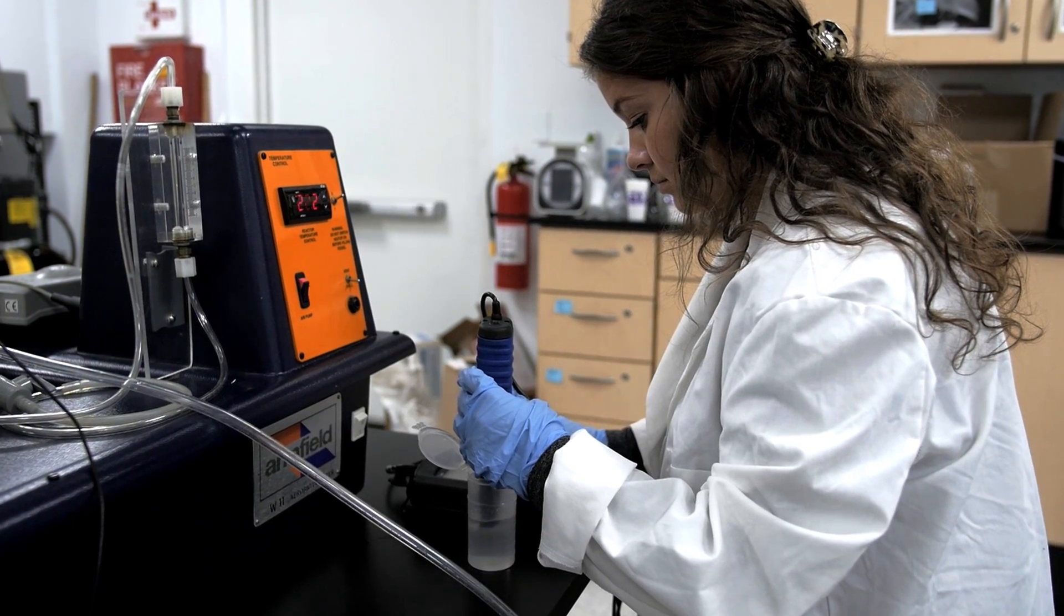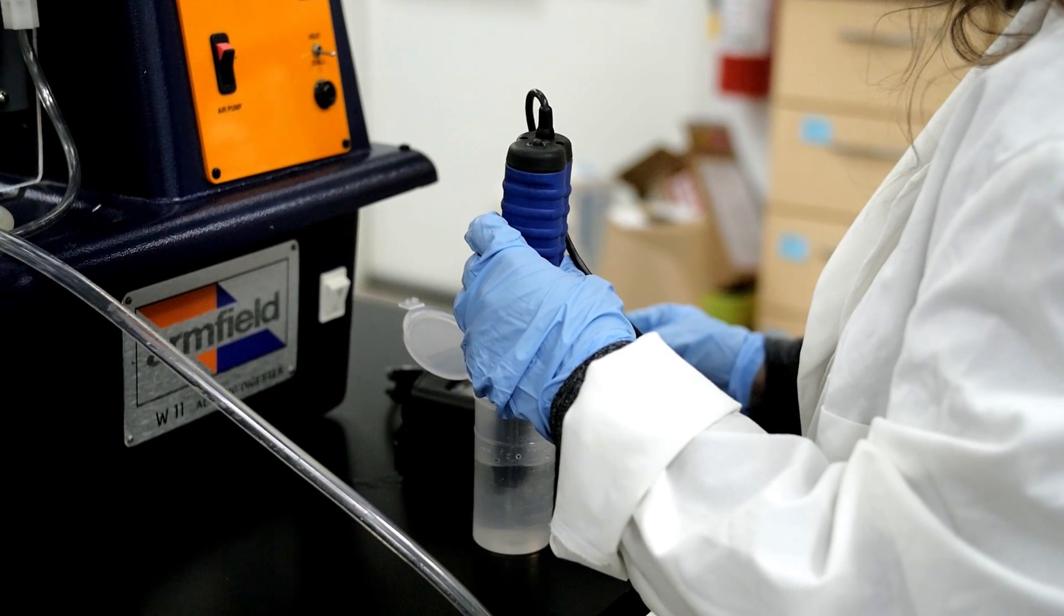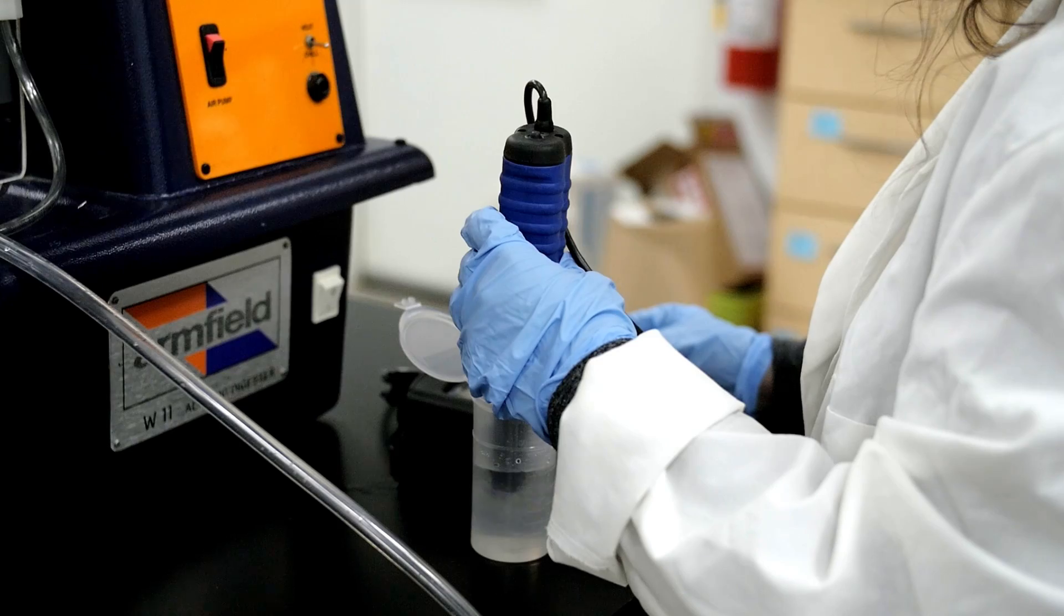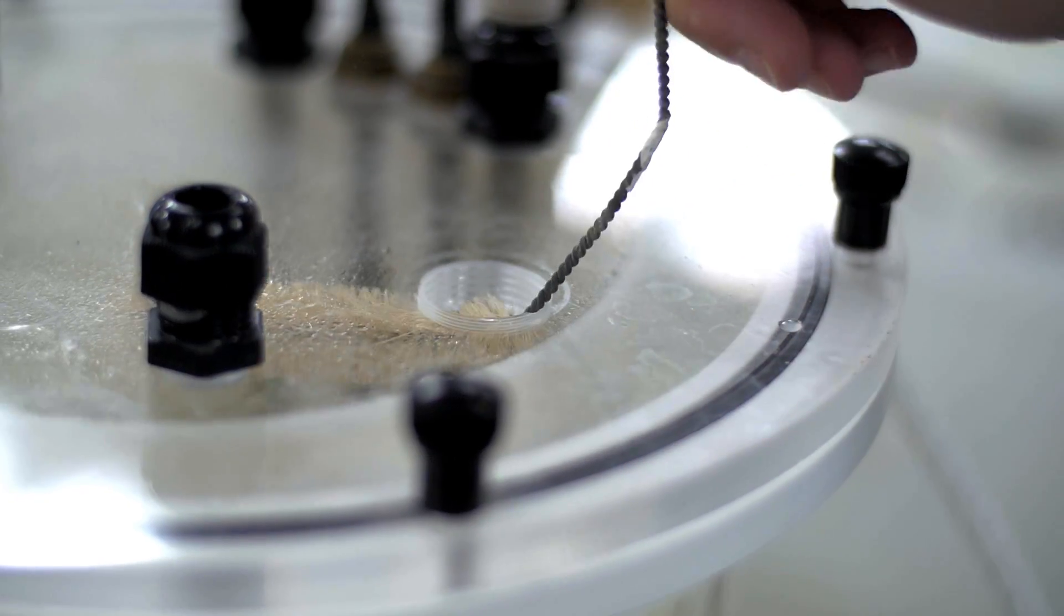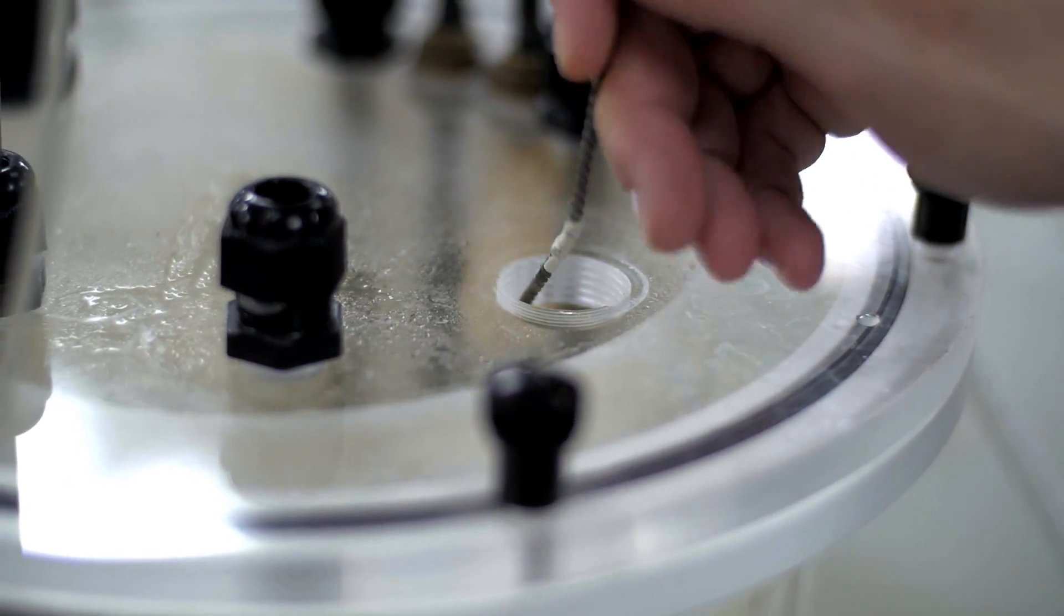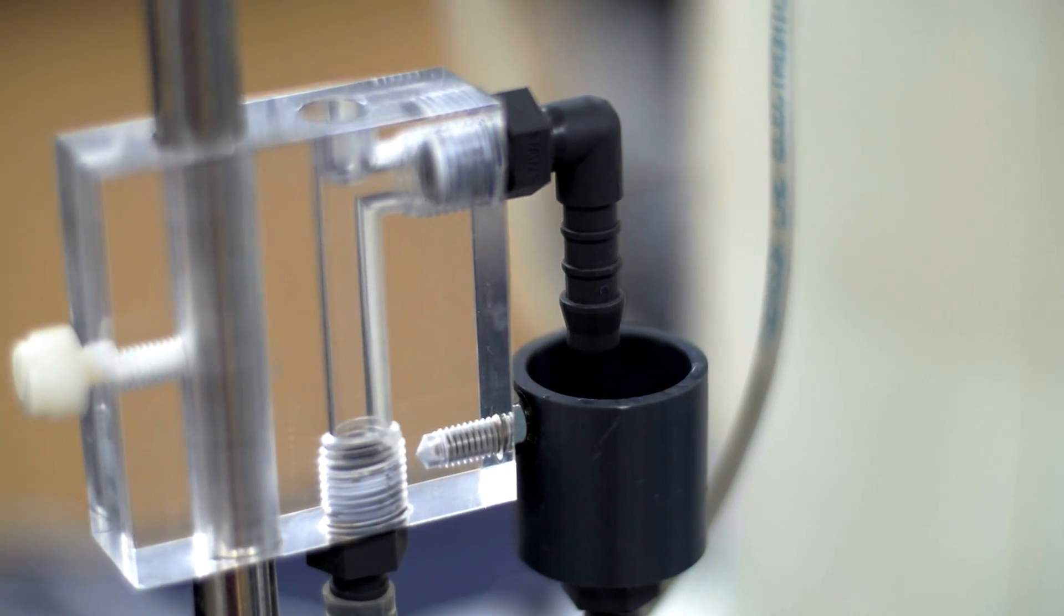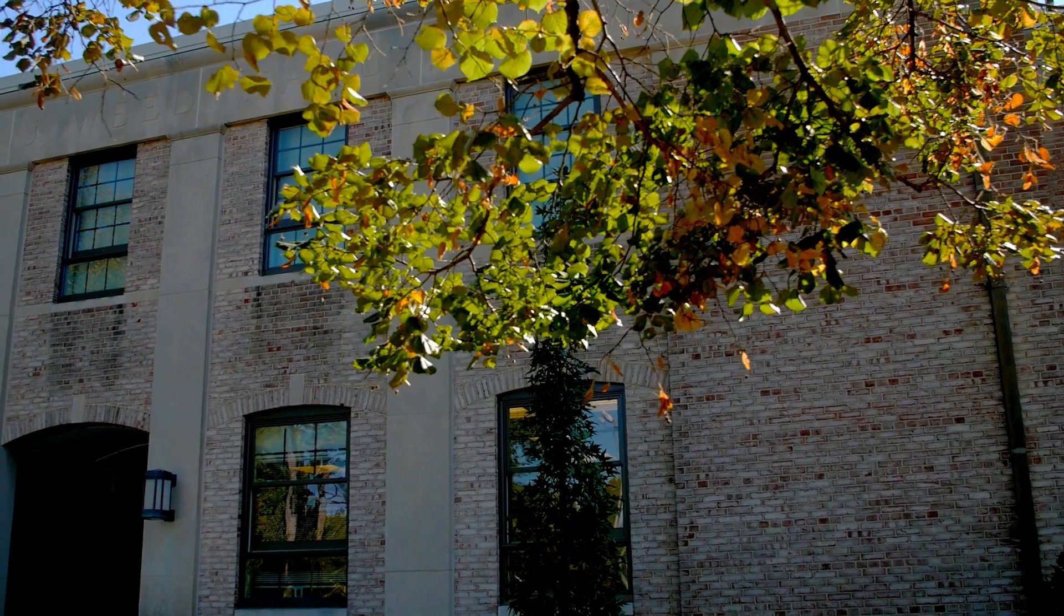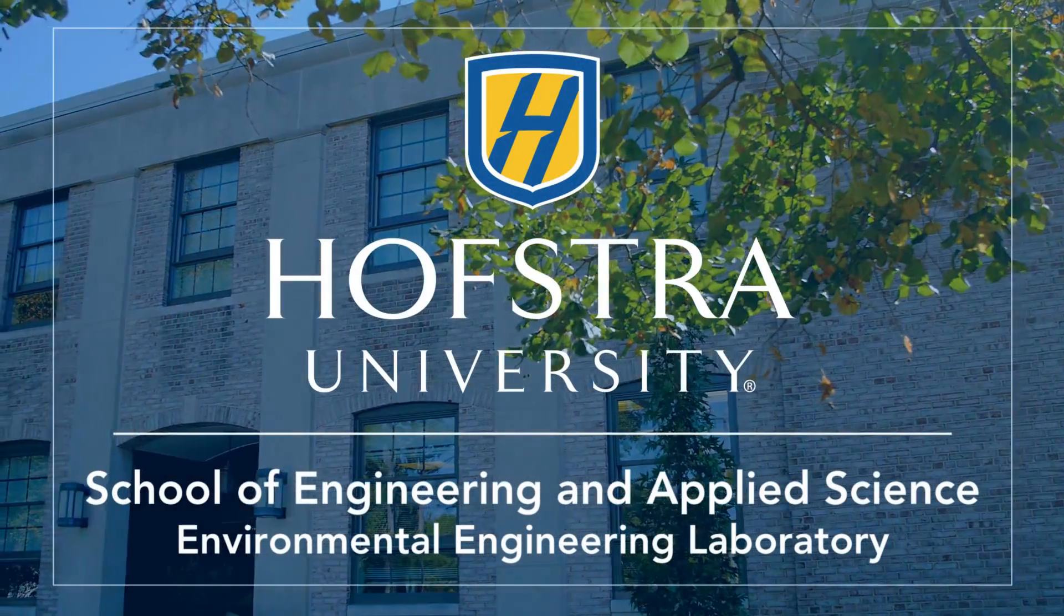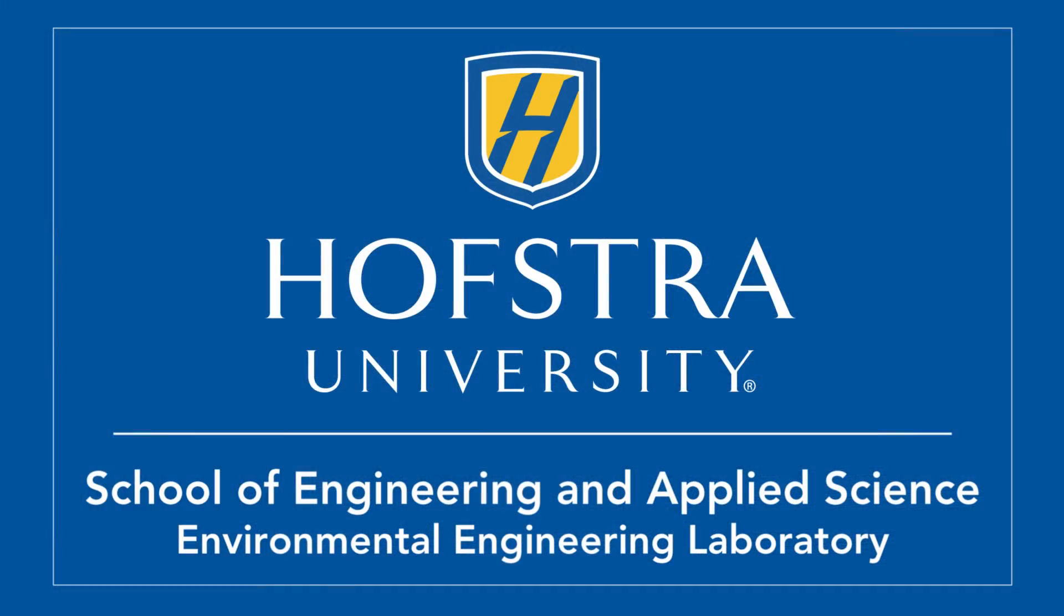Students use an oxygen probe to make sure there's enough oxygen in the water to break down the waste. They can also measure the amount of waste in the water by performing a chemical oxygen demand test before and after it passes through the unit.